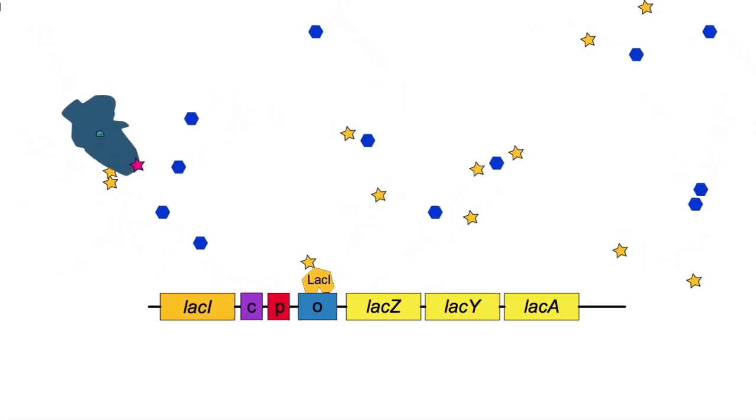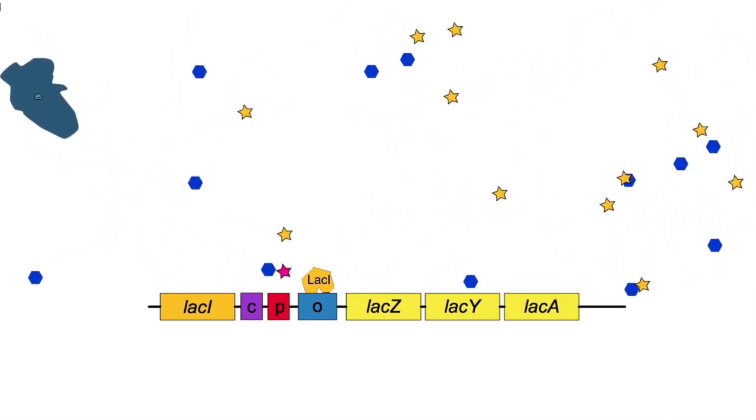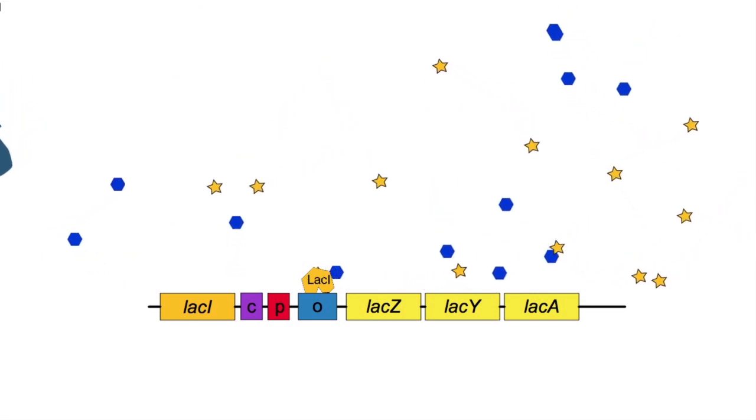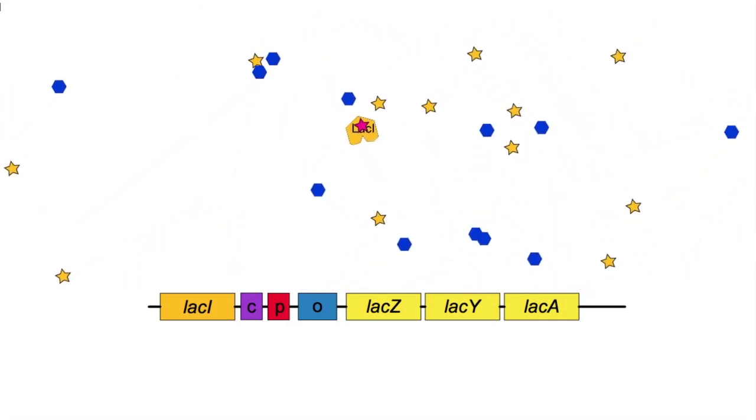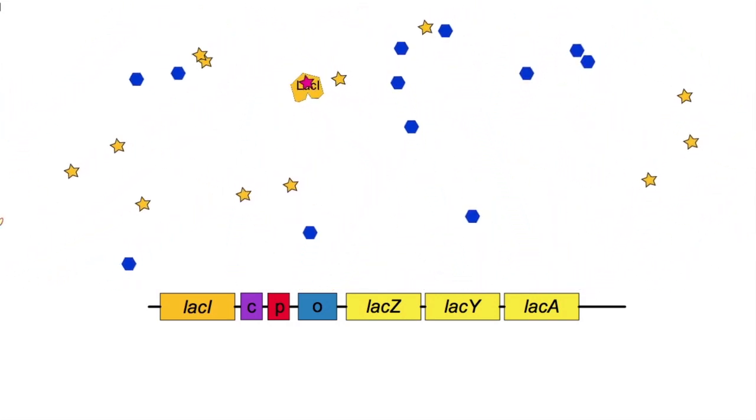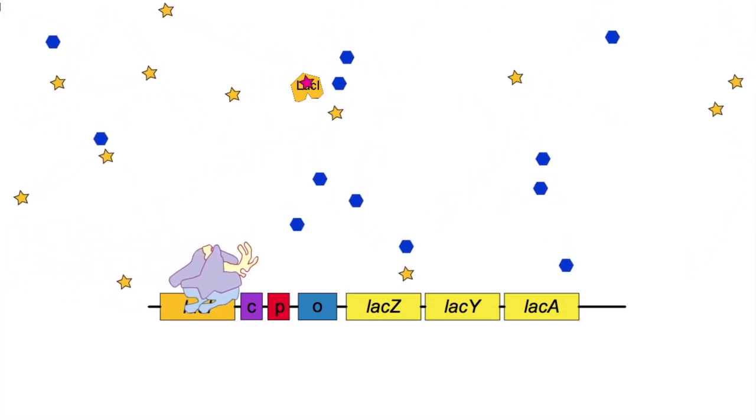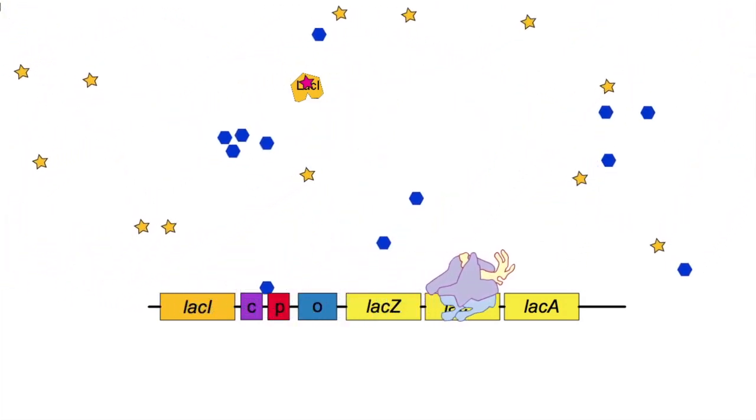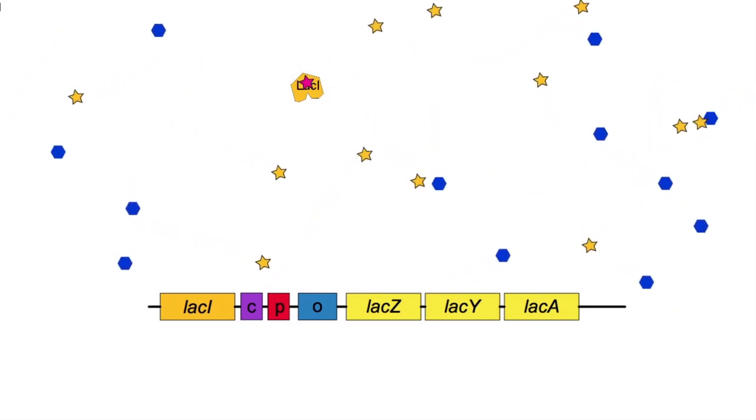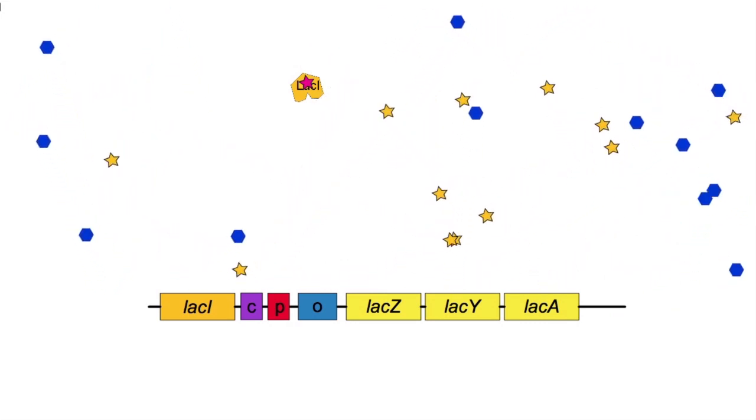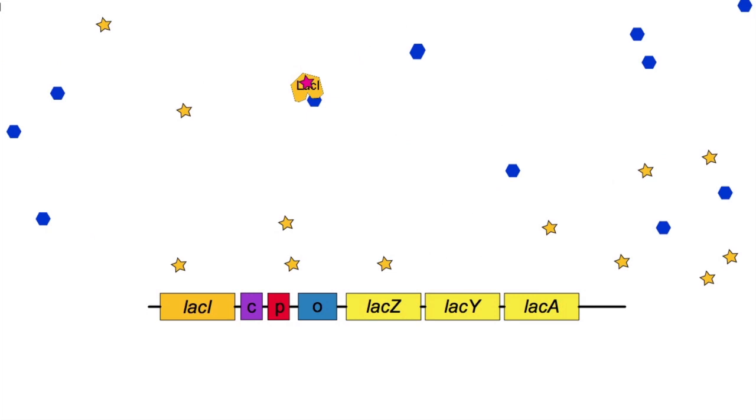All right. So now we have allolactose that then binds the lac repressor and activates it. It falls off the operon, so all will be set. Let's see what happens. And you can see that there's no expression. But wait! RNA polymerase just blasted right by. Why?